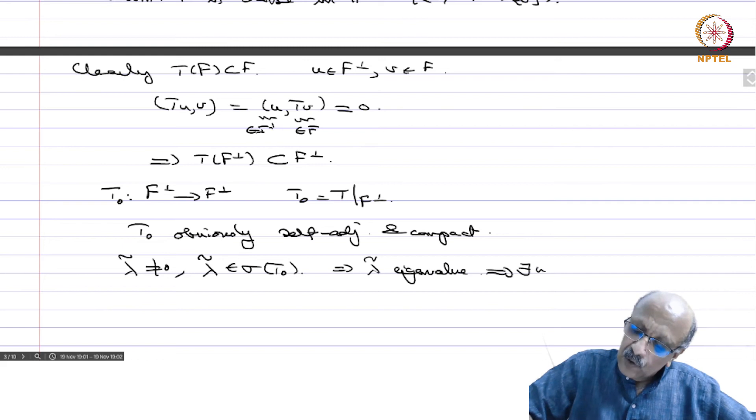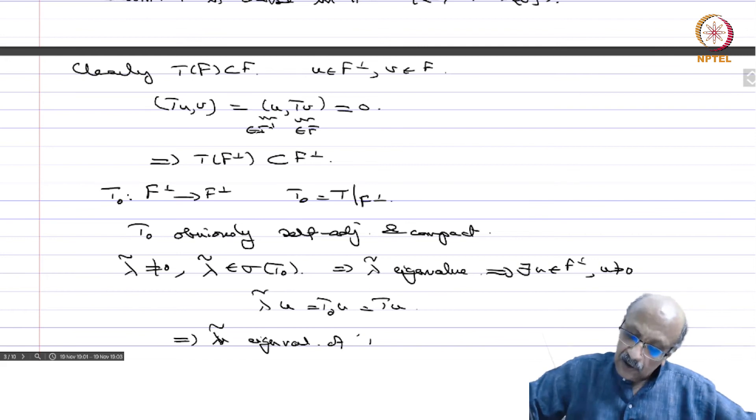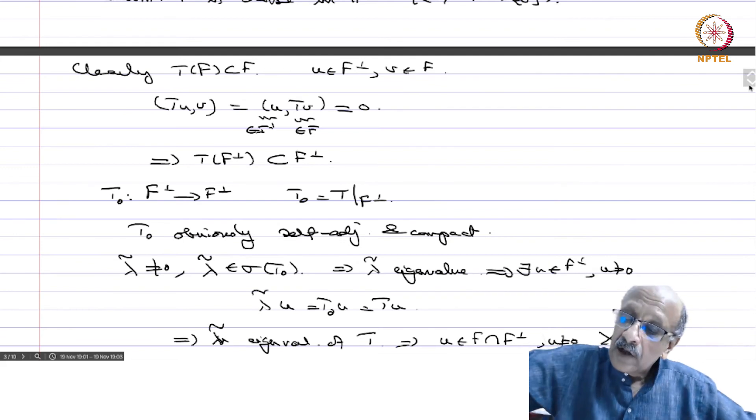This implies there exists u in F perp, u not equal to 0, such that lambda tilde u equals T_0(u) but T_0 is same as T(u). Implies that lambda tilde is an eigenvalue of T also. Therefore u belongs to F intersection F perp and u is not equal to 0 which is a contradiction.